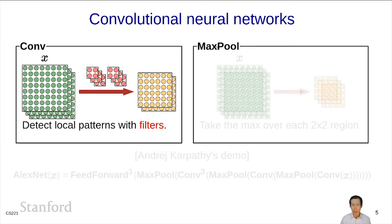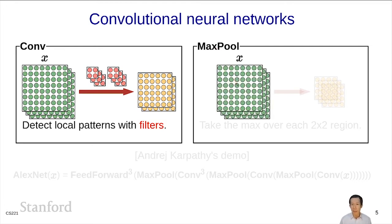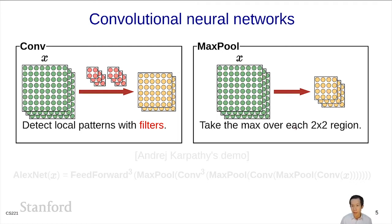The second operation is max pool, which again takes an input volume and produces a smaller output volume with the same number of channels. For every slice through the volume, it slides a max operation over every 2×2 or 3×3 region — the max over those values fills the corresponding output entry.